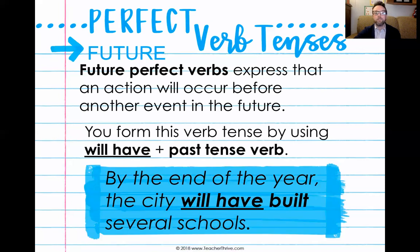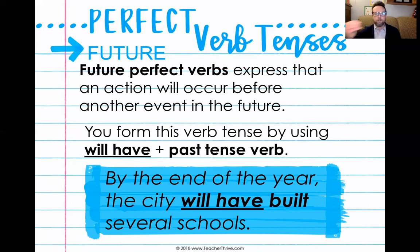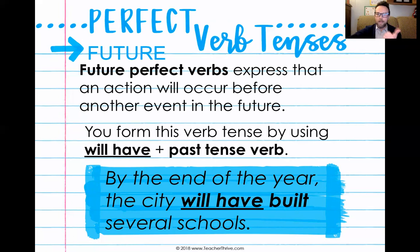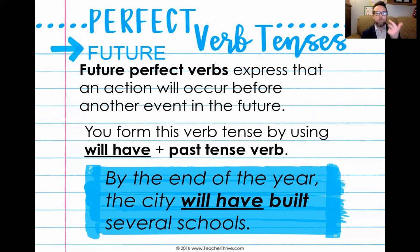So: 'By the end of the year, the city will have built several schools.' This is something that is going to happen in the future, but it expresses an action that's going to occur before another event. Before the year ends is when all the schools will hopefully be built. 'Will have' plus the past tense verb 'built.' Each of these uses a past tense verb, but it's the helping verb — whether it's past perfect, present perfect, or future perfect — that tells us the tense.